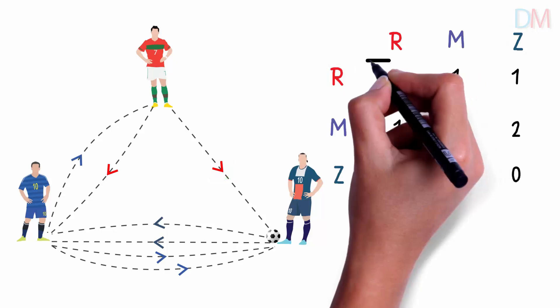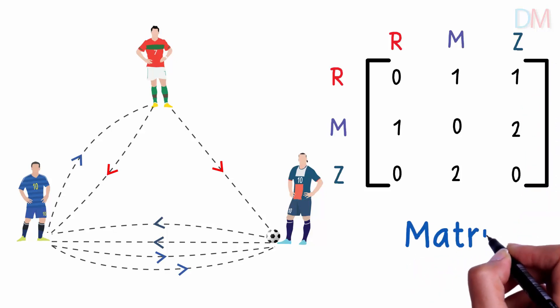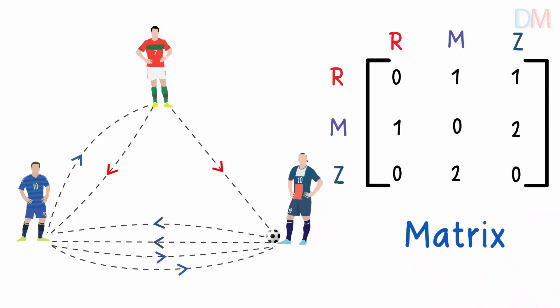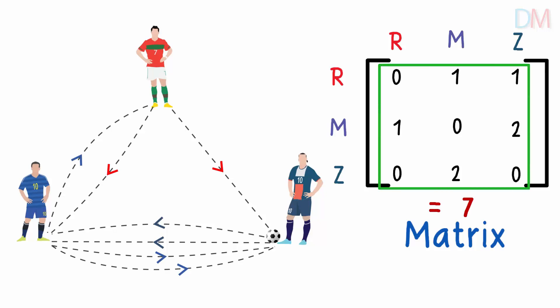What we see here is nothing but a matrix — it is nothing but an array of elements, something which a computer can decode. And it summarizes the entire warm-up session. Adding up all the numbers here will give us the total number of passes, and it also tells us the direction of the passes.